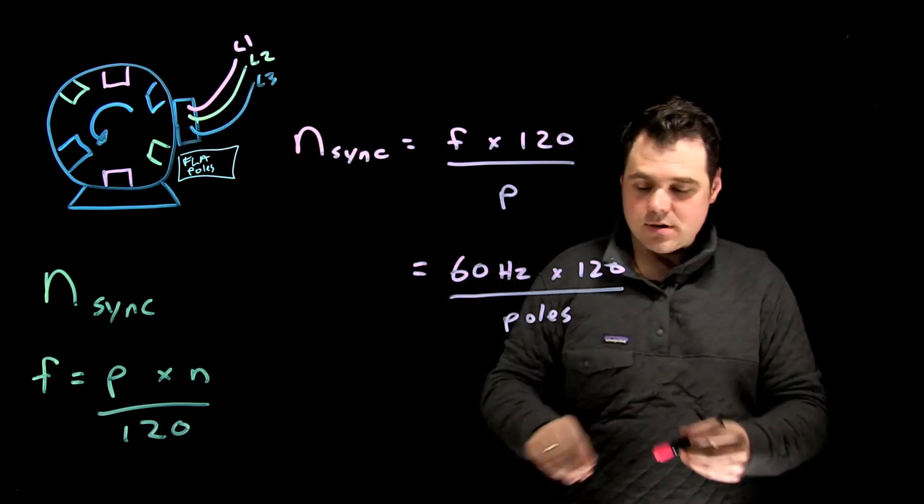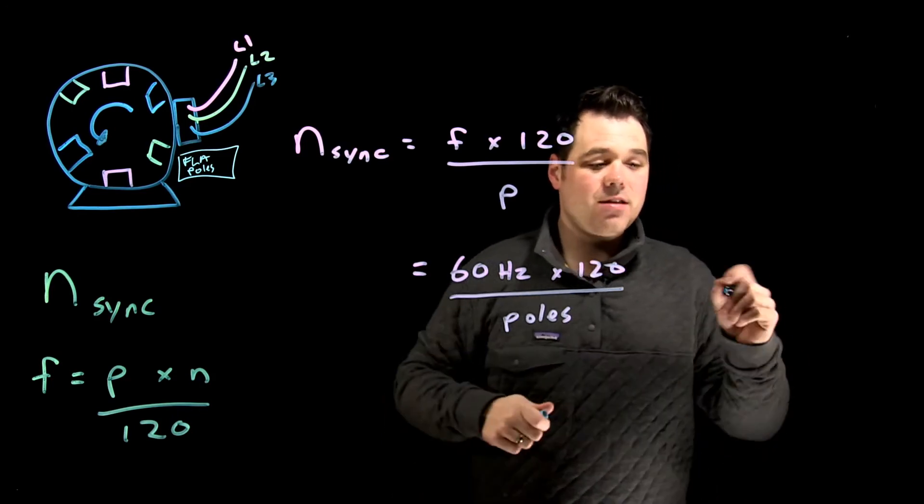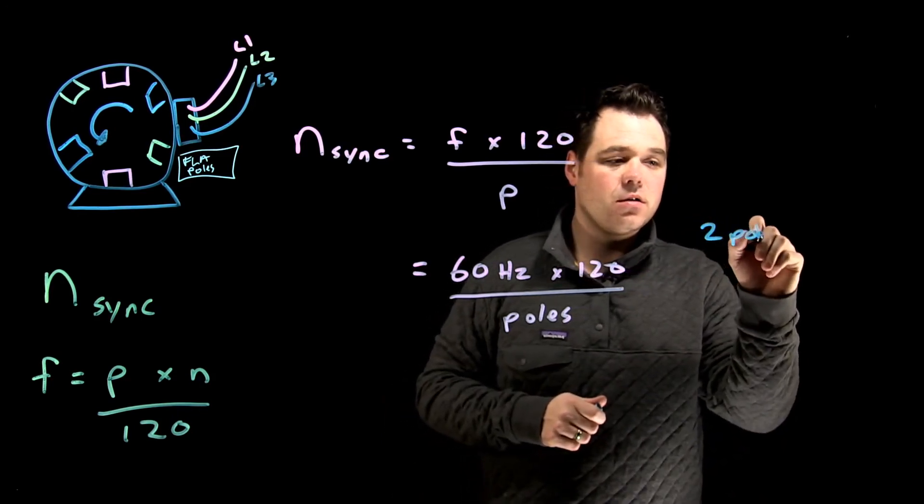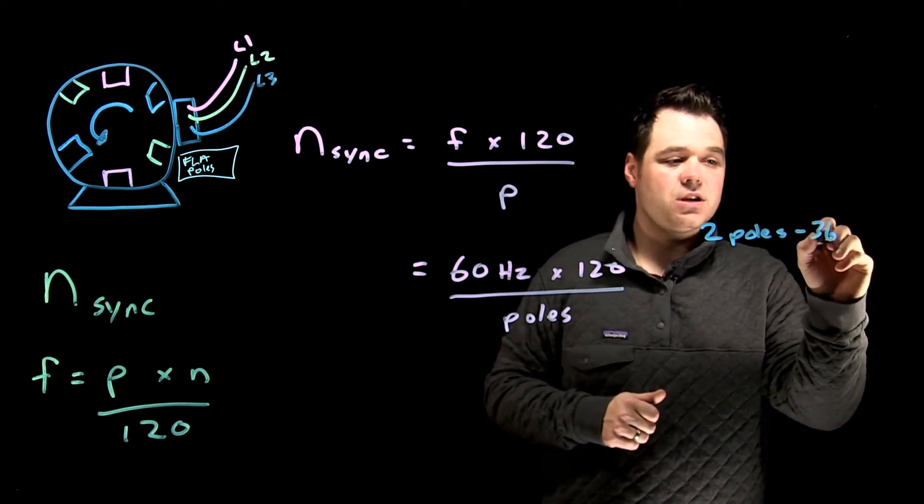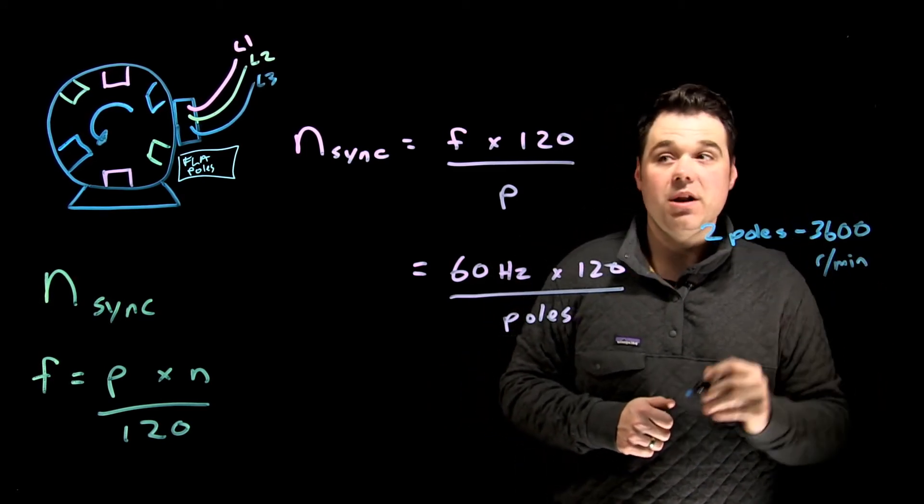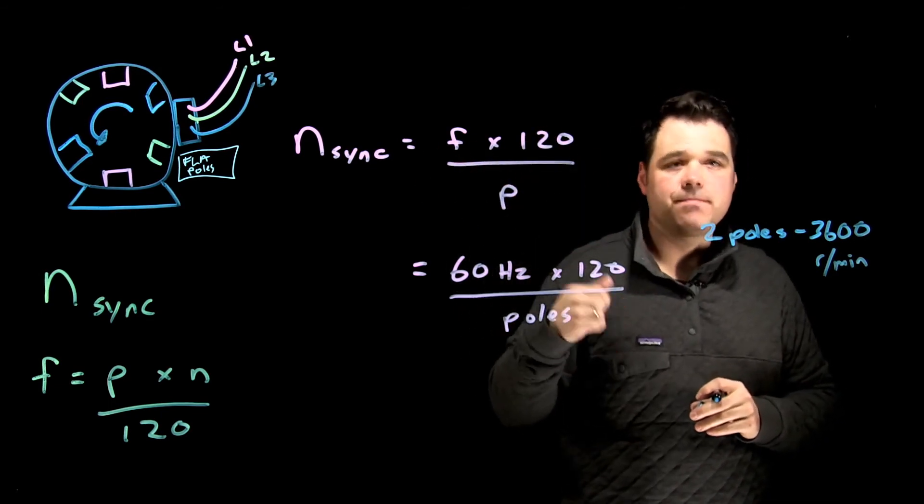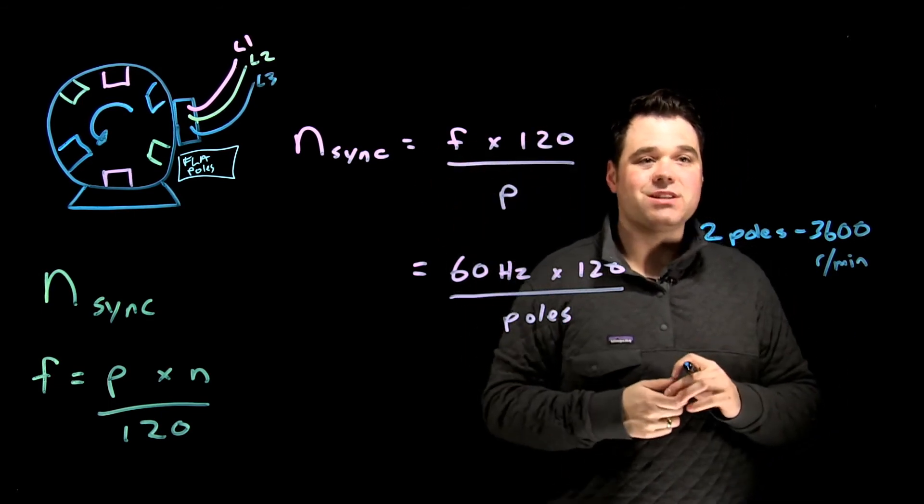So in this case with two poles, if we were to run that math, if we had two poles, our synchronous speed would be 3600 revolutions per minute. 60 times 120 divided by 2 gives us 3600.